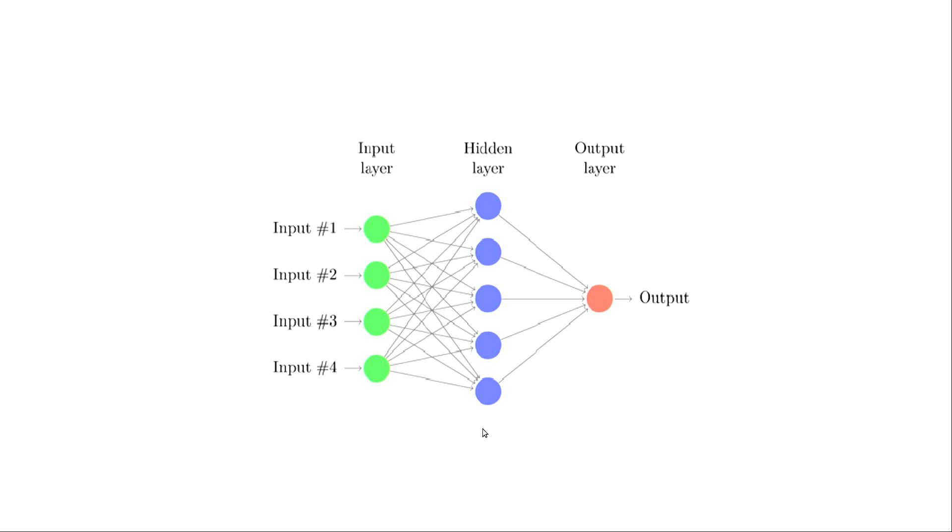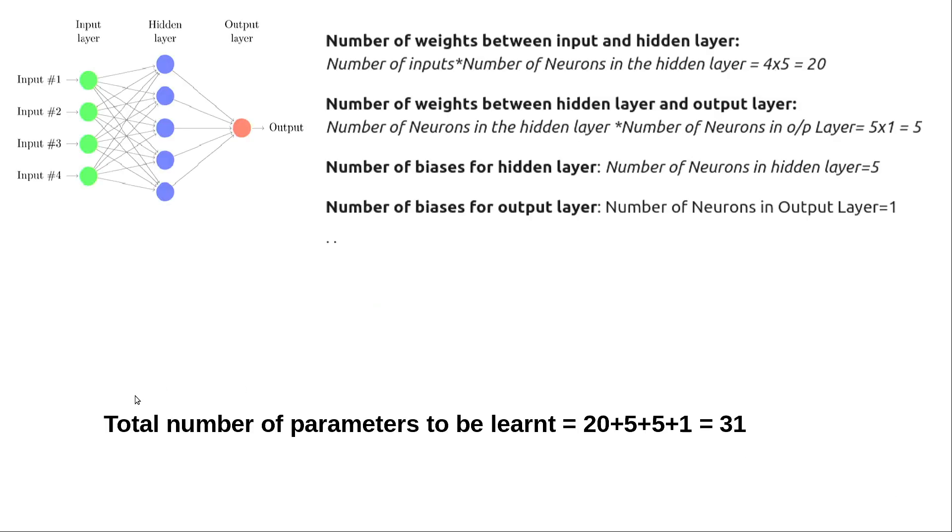Each of these connected paths has some weights, so now let's try to find out the number of parameters to be learned. Here is the answer: the number of inputs times the number of neurons in the first layer is 4 times 5, equals 20.